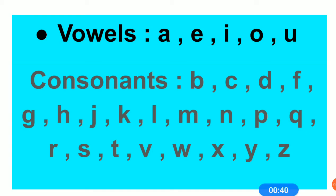And consonants are 21: B, C, D, F, G, H, J, K, L, M, N, P, Q, R, S, T, V, W, X, Y, Z.